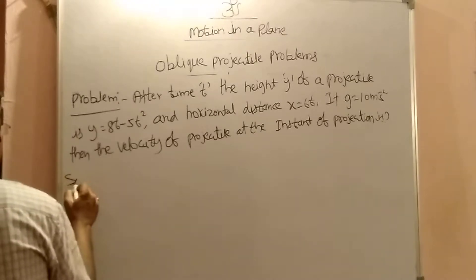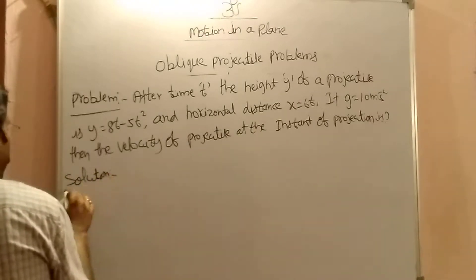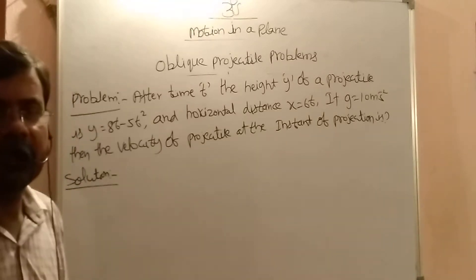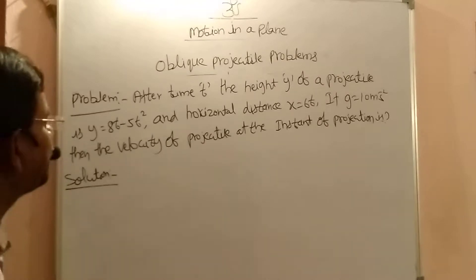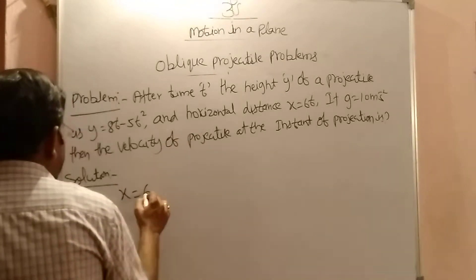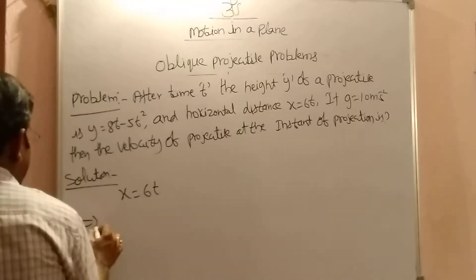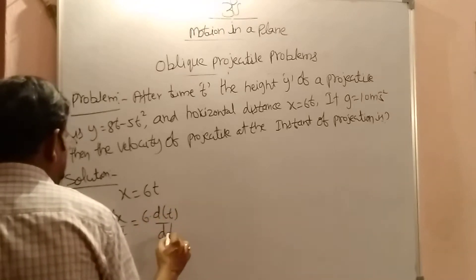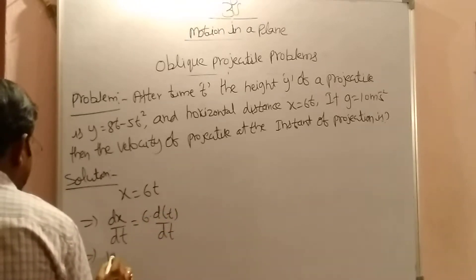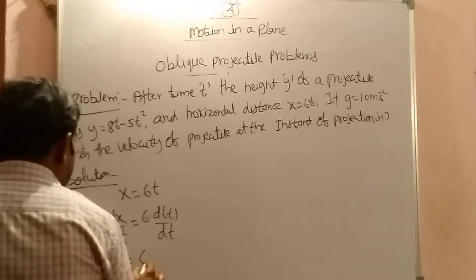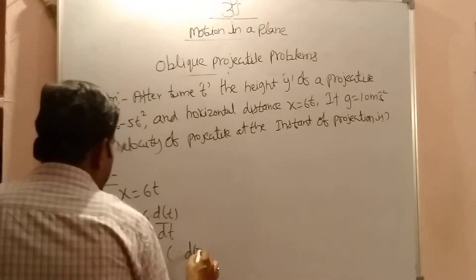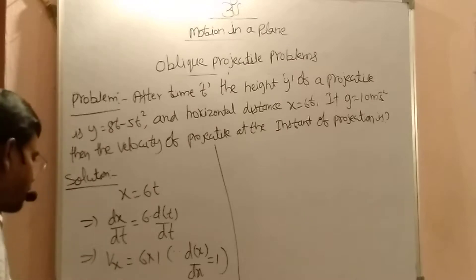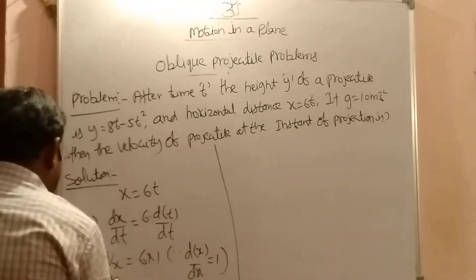In this case, height means vertical displacement is given, and rate of change of displacement is called velocity. x means horizontal displacement, y means vertical displacement. x is given as x = 60t. Taking differentiation: dx/dt equals 60 times differentiation of t with respect to t. So dx/dt means velocity in the x direction — that is 60 × 1 = 60. Since differentiation of t with respect to t equals 1, vx = 60 m/s.